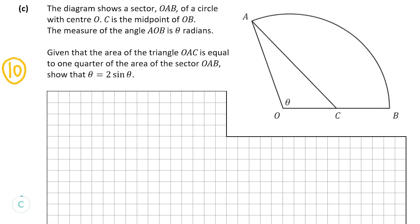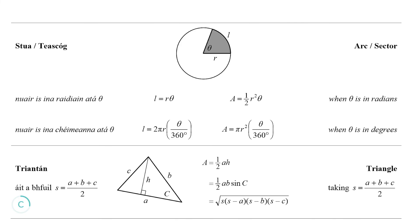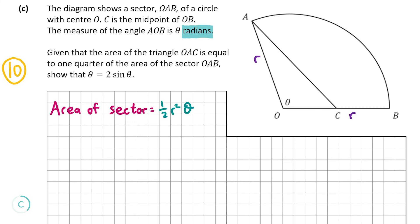Now for part C, worth 10 marks. We're shown a sector OAB of a circle with centre O. C is the midpoint of line OB, and the angle AOB is theta measured in radians — that's important. We're told the area of triangle OAC is equal to a quarter of the area of sector OAB, and we need to show that theta equals 2 sine theta. We'll call the radius r, so OA and OB are both equal to r. The area of the sector — from page 9 of the formula and tables book — is one half r squared theta.